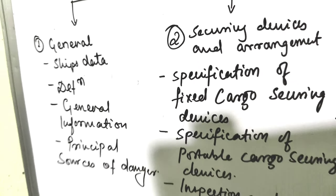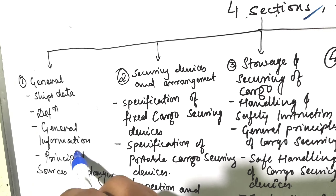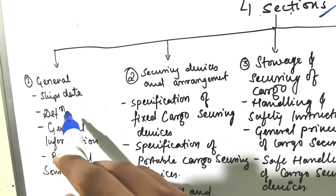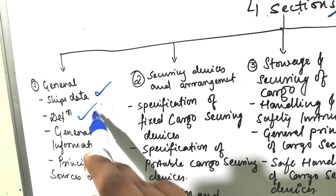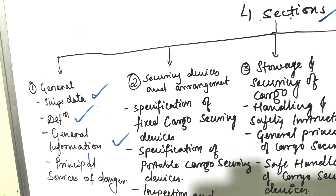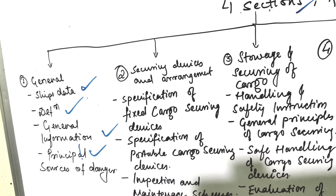The first section is General. In General we have ship's data, definitions, general information, and principal sources of danger.